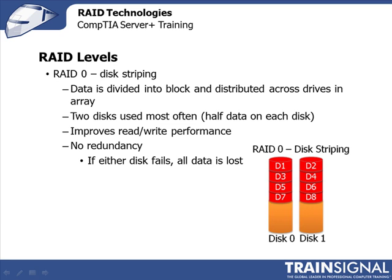Two disks are used most often, with half the data residing on each disk. And you can see that in the image on the screen, where data is distributed across both disks that are a part of this array. RAID 0 will give you improved read-write performance, but there's no redundancy.